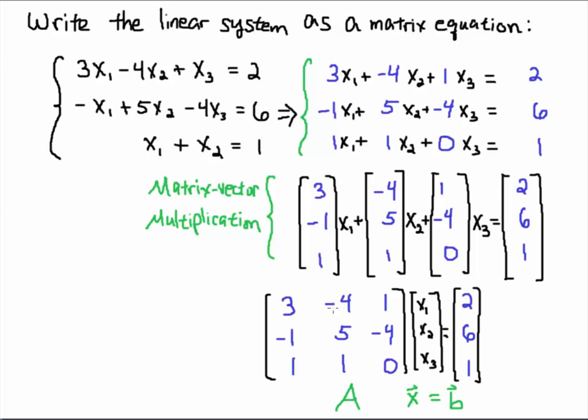When you had the vector-matrix multiply, you took this column vector and you multiplied it by this row: you have 3x1 - 4x2 + x3. Then you took this column vector and you had -1x1 + 5x2 - 4x3, and you took this column vector and you multiplied it and you got x1 + x2 + 0x3.